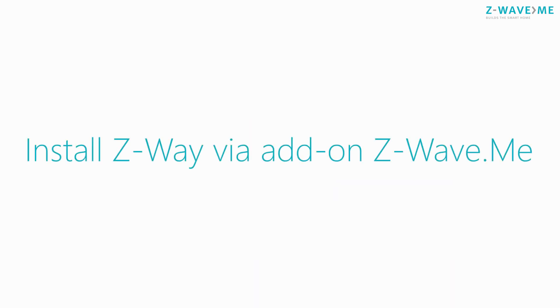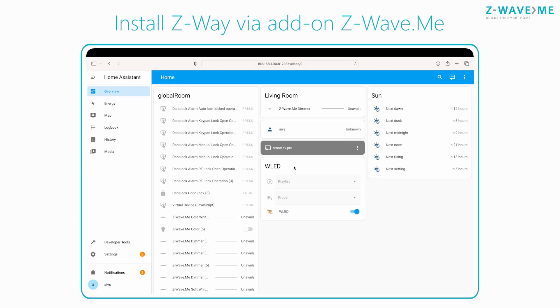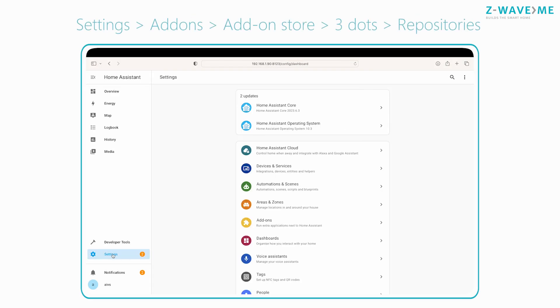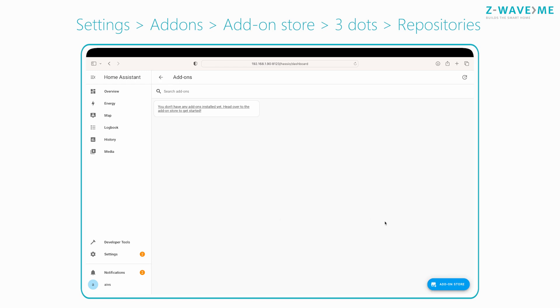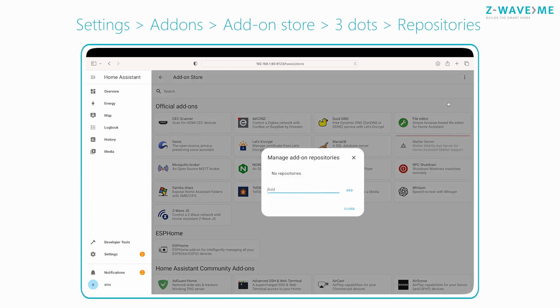To install Z-Wave via the add-on, go to the add-on store. Press Settings, then Add-ons, then Add-on Store, then the three dots menu, and select Repositories.